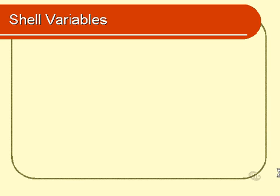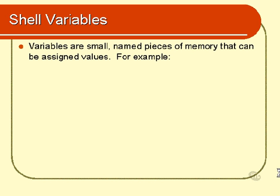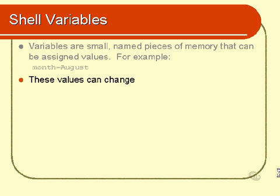For the rest of you, I will take a few seconds to explain this. The technical definition is that a variable is a small, named piece of memory that can be assigned a value. An example of a variable might be the variable called month, which I am assigning a value of August to using the equal sign. We say that the variable called month contains the value of August. And these values can change — I could assign another value to month, such as July.